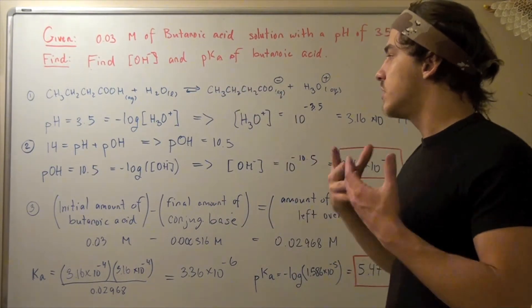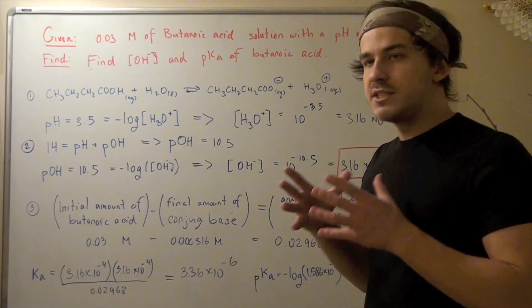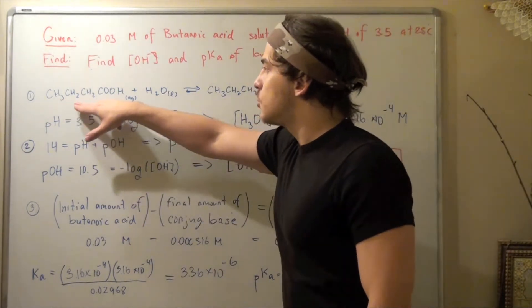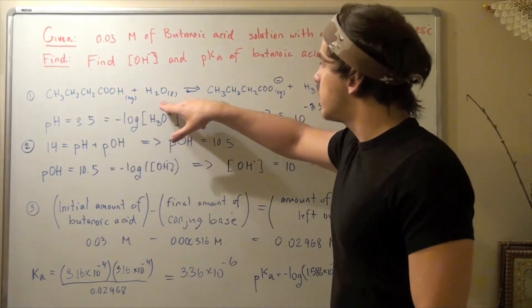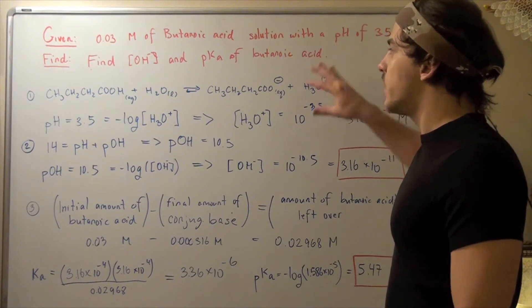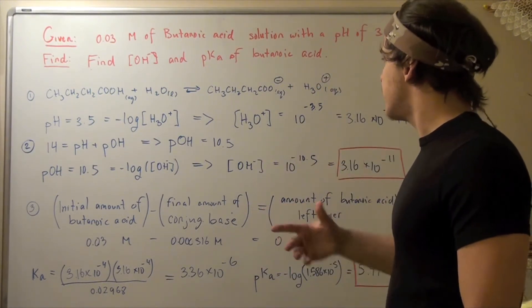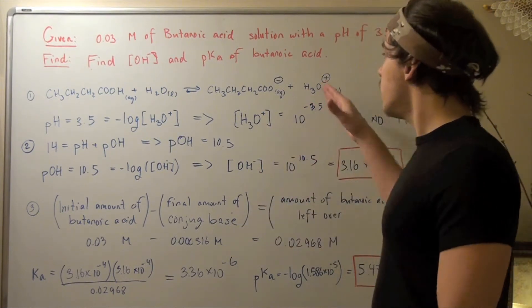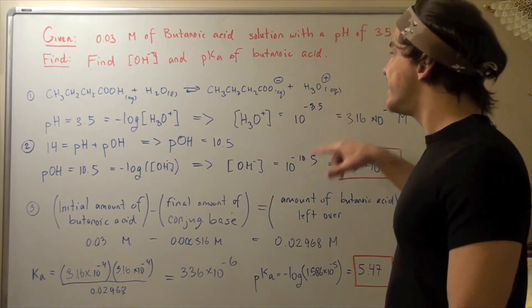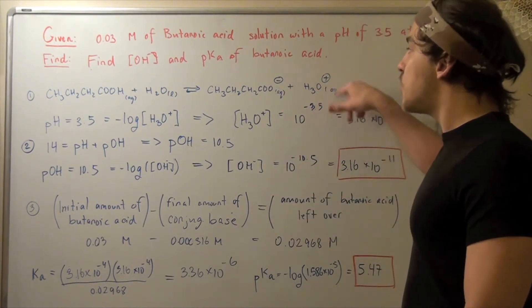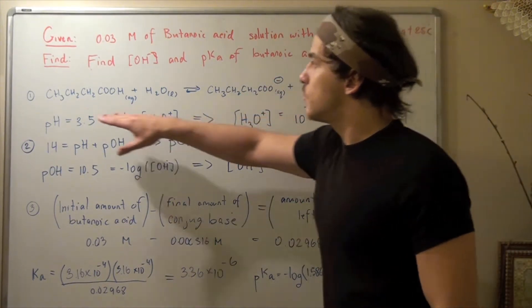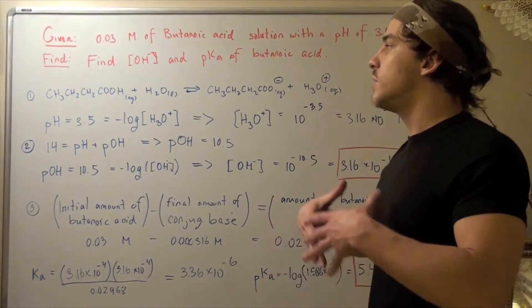We know that our initial condition is 0.03 molar of butanoic acid. So our initial condition is we have 0.03 of the acid, we don't care about water, we have none of the conjugate base, and we have a very small amount of H3O+. Because in pure water, some water dissociates into H3O+. But this amount is so small, it's 10 to the negative 7 molar, and that's very small, so we can approximate this to be 0. Initially we have 0 of conjugate base, 0 of hydronium, and 0.03 molar of our acid.